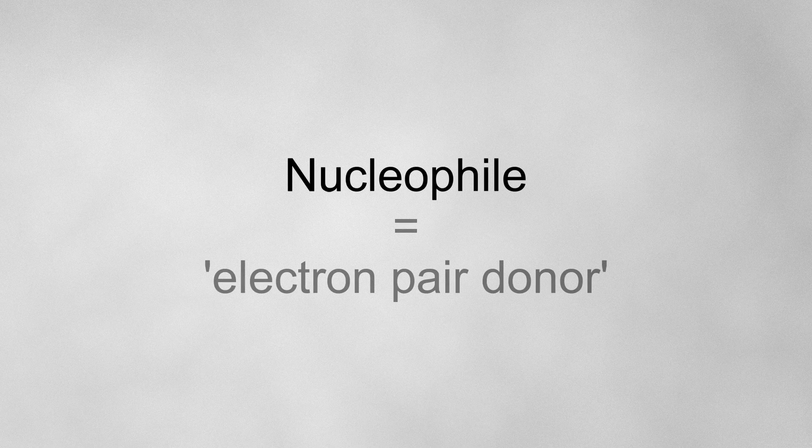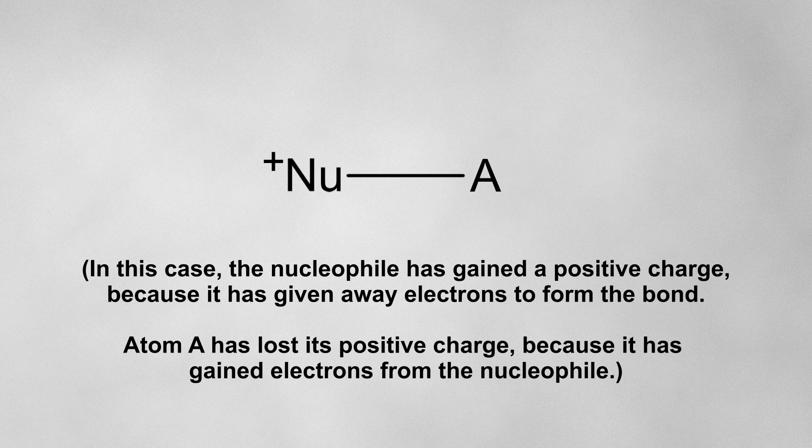A nucleophile is defined as an electron pair donor. This means it will have an atom with a lone pair of electrons on it that can be donated to an atom with a partial positive or full positive charge, in order to form a covalent bond between the two.